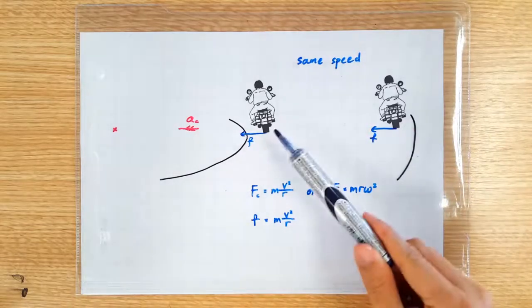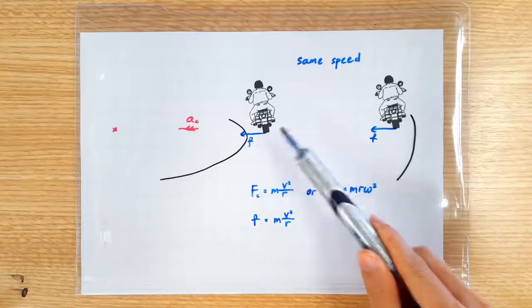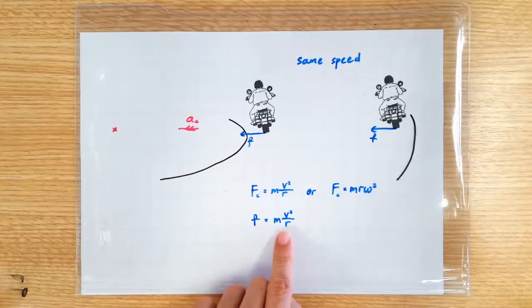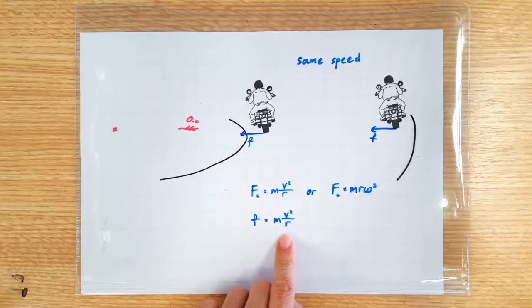So applying Newton's second law on the motorcyclists, we have friction providing the required centripetal force, mv squared over r.